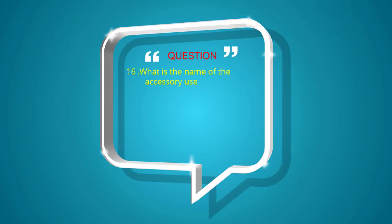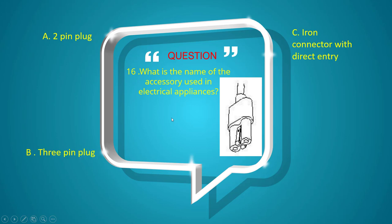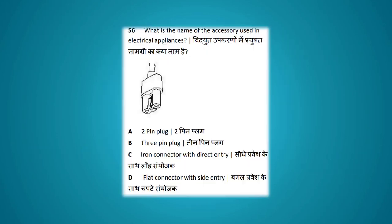What is the name of the accessory used in electrical appliances shown? Options: two-pin plug, three-pin plug, iron connector with direct entry, flat connector with side entry. The answer is iron connector with direct entry.